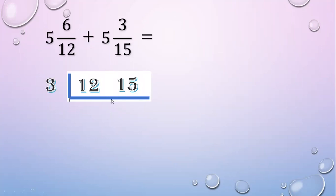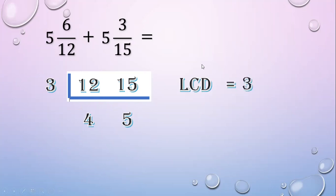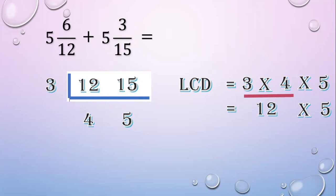Divide: 12 divided by 3 equals 4; 15 divided by 3 equals 5. Then 4 and 5 have no common factor. The LCD equals 3 times 4 times 5. 3 times 4 equals 12; 12 times 5 equals 60.